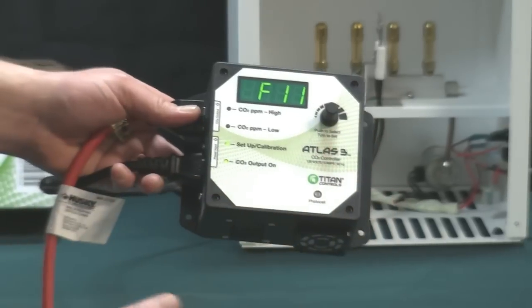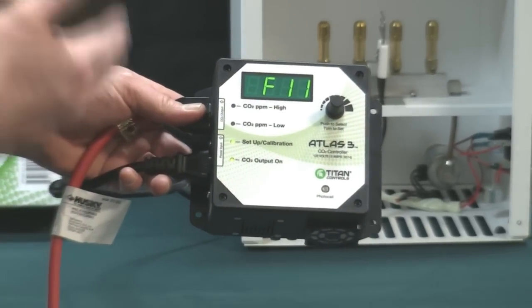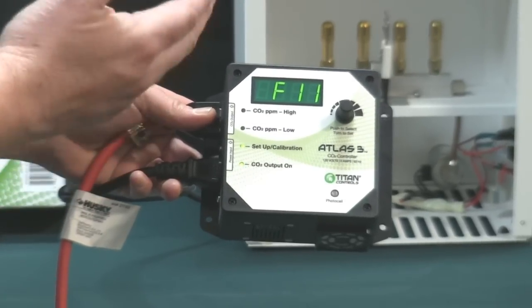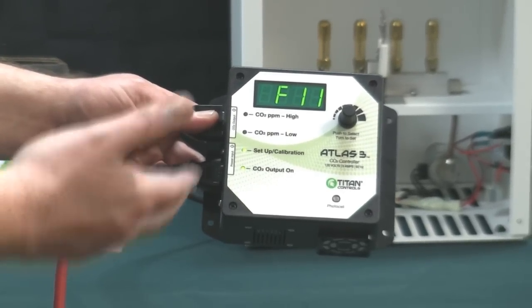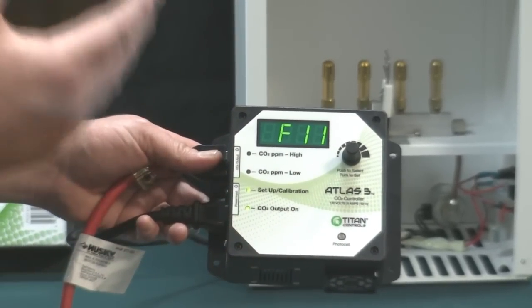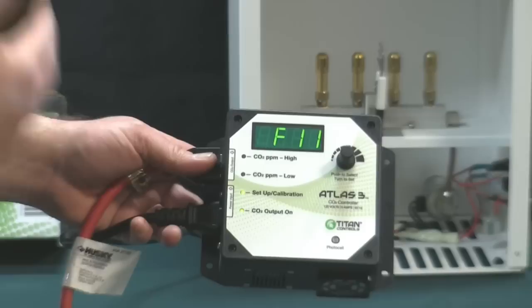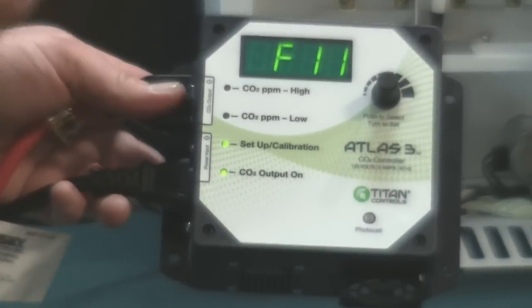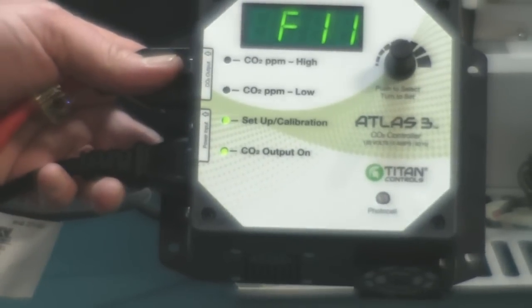The next button down here puts it in the F11 mode. This is for a daytime only mode. It has a daytime only mode for CO2 enrichment, a nighttime only mode for CO2 enrichment, a day and night mode for CO2 enrichment, or it can be used as a night only evacuation of CO2, a day only evacuation of CO2, or a day and night evacuation of CO2.